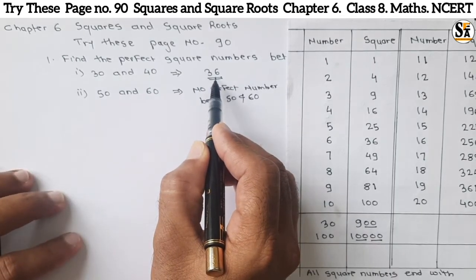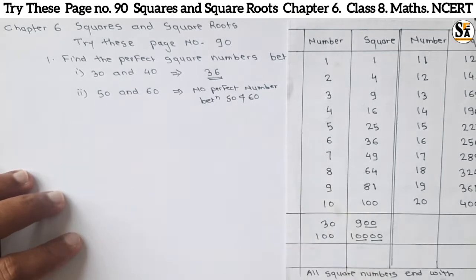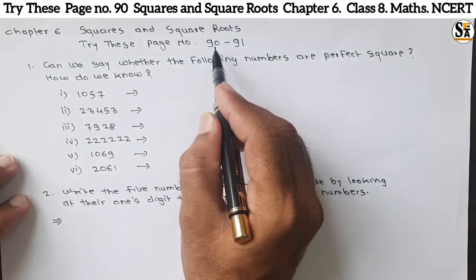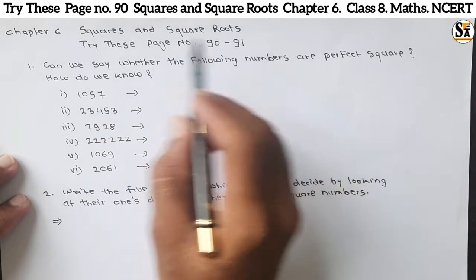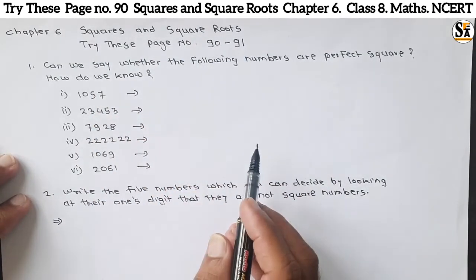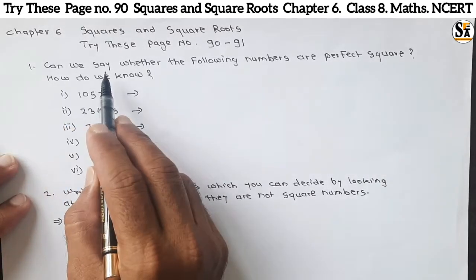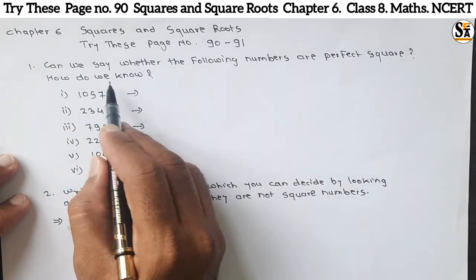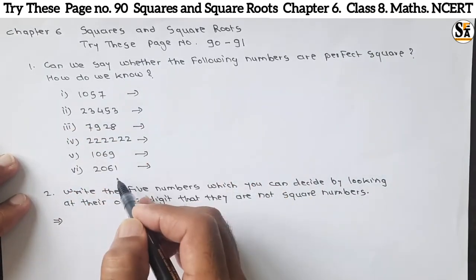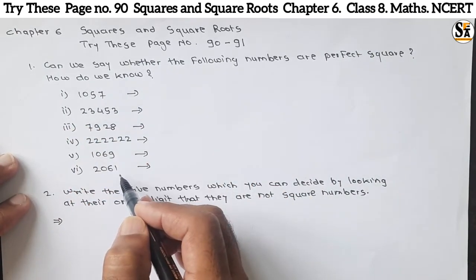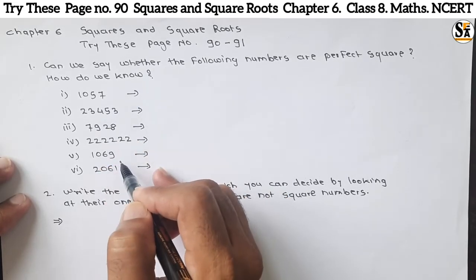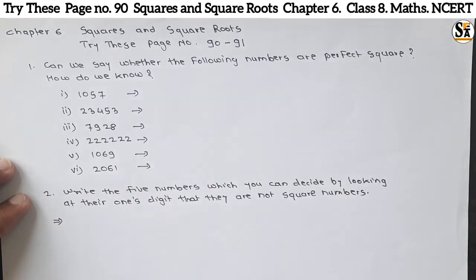So those are the two answers. Now see the next question under the 'Try This' section, page numbers 90 and 91, chapter Squares and Square Roots. The first question is: can we say whether the following numbers are perfect squares? These are the numbers given and we have to tell whether these are perfect squares or not.